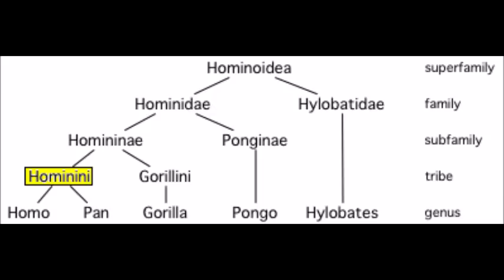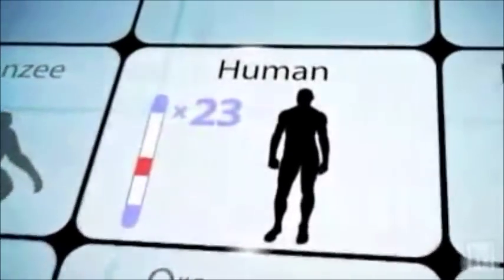Or the common ancestor had 24 pairs, and within the line leading to humans after splitting from the chimpanzee line, two chromosomes fused end-to-end, resulting in us having 23 pairs. The latter hypothesis is far more parsimonious, since that would only require one fusion event compared to three independent fissions among the other great apes.